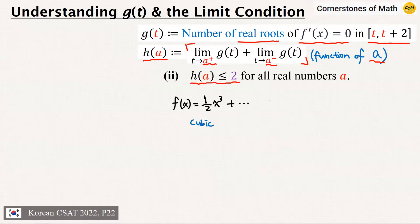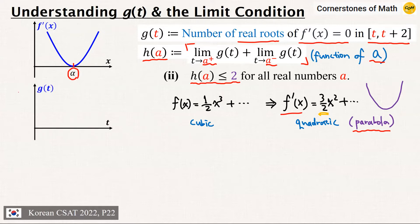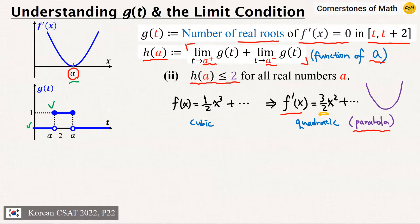Now we already know that f(x) is a cubic function, (1/2)x³ + something. This means that its derivative f'(x) is a quadratic function with a positive leading coefficient, so the graph of f'(x) is a convex parabola. Let us take a look at one example where the graph of f'(x) has a repeated root — the graph just touches the x-axis at a single value α. In this case, g(t) is 0 when t is sufficiently small because the interval [t, t+2] does not contain the root x = α. But when t becomes α−2, the value of g(t) jumps to 1, since the interval now contains x = α. The value of g(t) remains 1 until t reaches α, and beyond that, g(t) drops to 0.